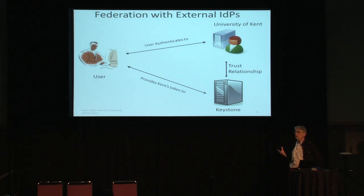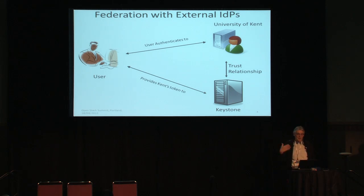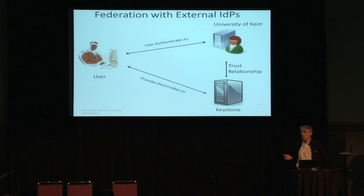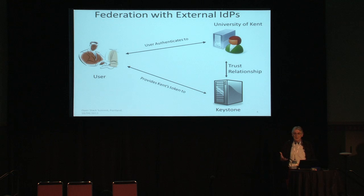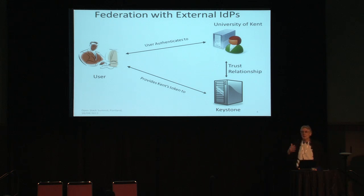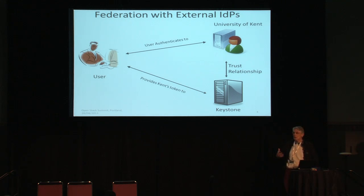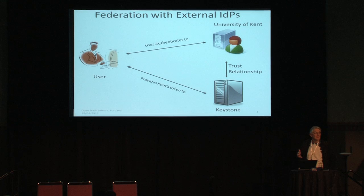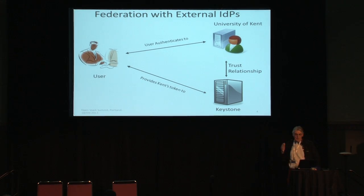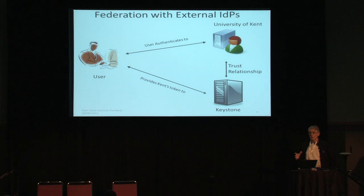For example, I go to the University of Kent and authenticate with my existing credentials. There's a trust relationship set up between Keystone and the University of Kent's identity provider, which provides an assertion to Keystone that I've been authenticated correctly. This means you no longer need to provision users in Keystone, because users are already provisioned in their organisations — registered when they start, attributes updated in the LDAP directory as roles change, and removed when they leave. We rely on these external identity providers to manage users for our cloud service.